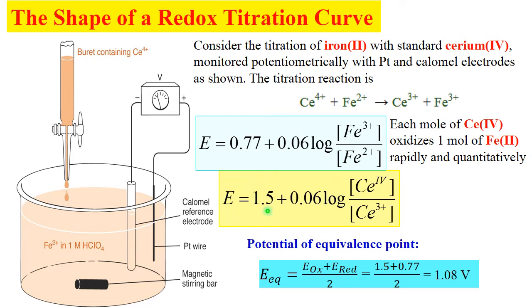Very similar Nernst equation, just with different E0, describes cerium 4 to cerium 3 ratio.